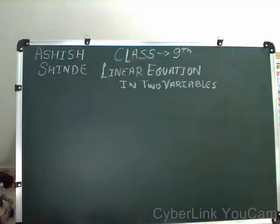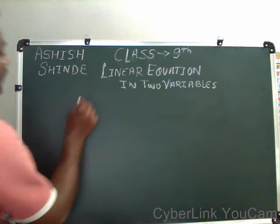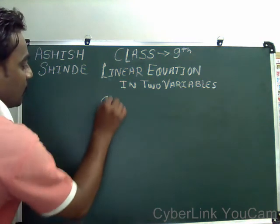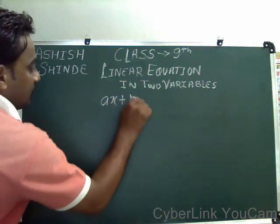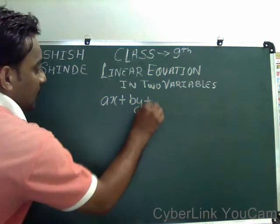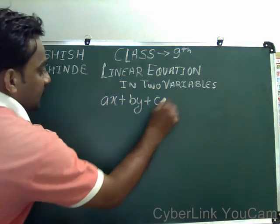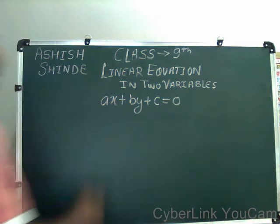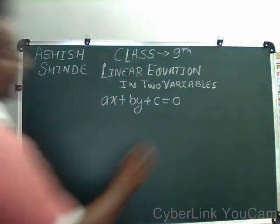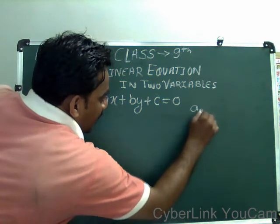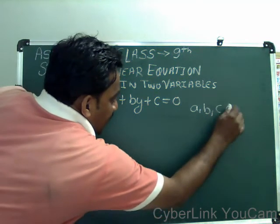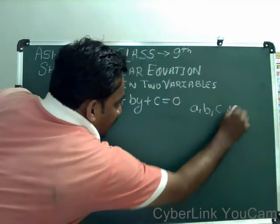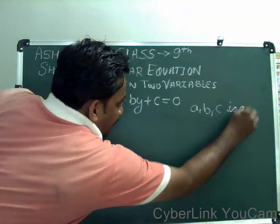First of all, what is a linear equation in 2 variables? The equation is in the form of Ax plus By plus C equals 0, where A, B, C are real numbers.